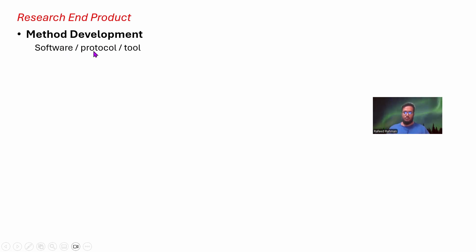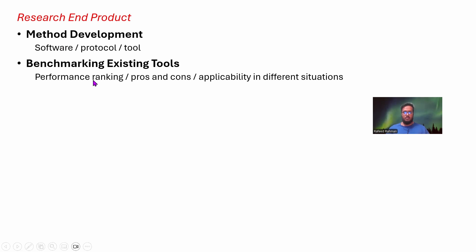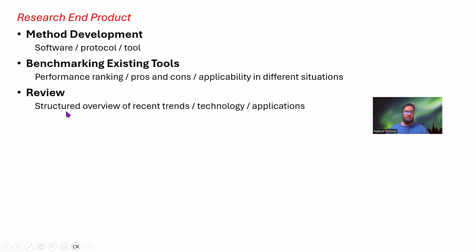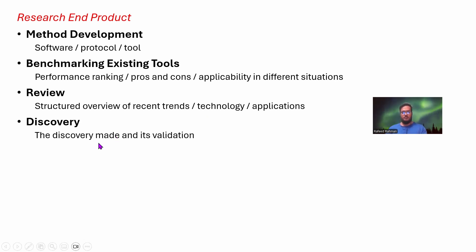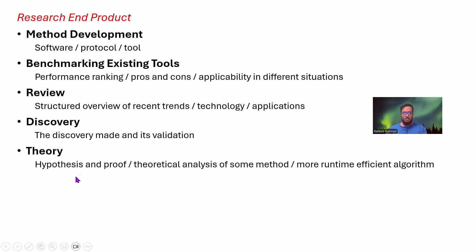After all of that, what is the end product of your research? For method development, your output will typically be software, a protocol, or a tool. For benchmarking, it's a performance ranking of existing tools, their pros and cons, and their applicability in different situations. For review, it's a structured overview of recent trends and technologies in that field. For discovery, it's the discovery itself and its validation. For theory, it's a hypothesis and proof, theoretical analysis of a method, or in computer science, a more runtime-efficient algorithm.